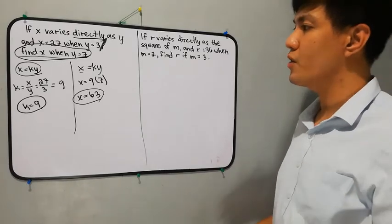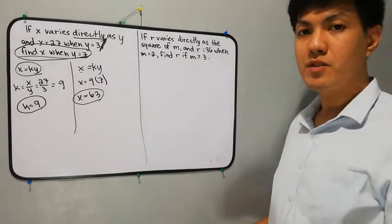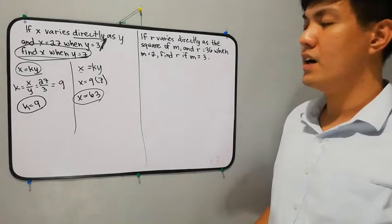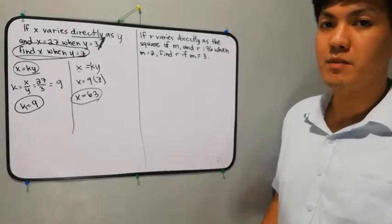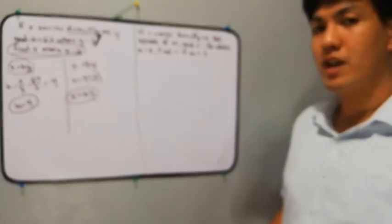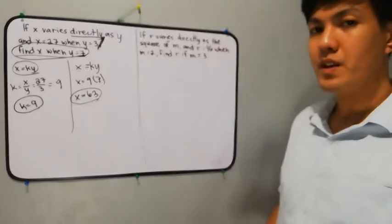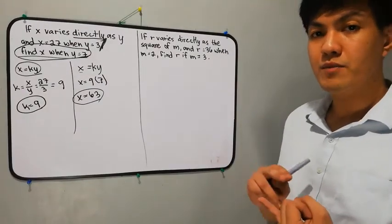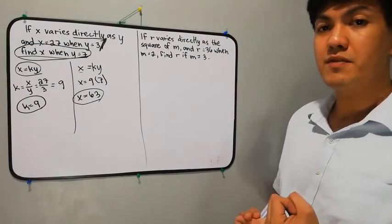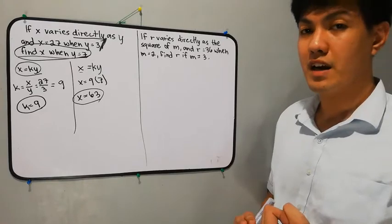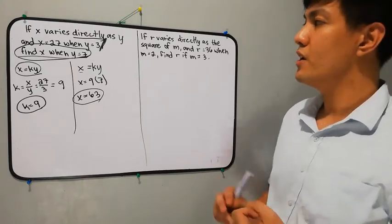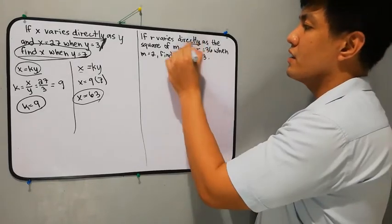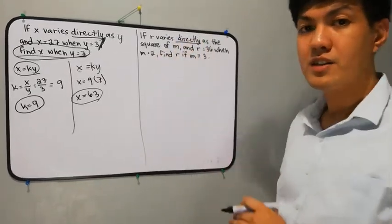For our next example: R varies directly as the square of M, and R is equal to 36 when M is equal to 2. Find R if M is equal to 3. First step: identify if the given is direct or inverse. This one is direct variation.